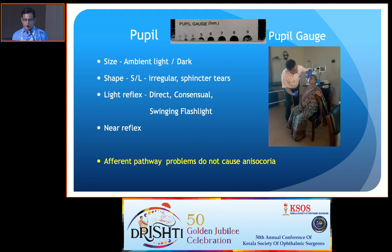A common exam question that examiners ask is: does an afferent pathway lesion cause anisocoria? The answer is no — only an efferent pathway lesion will cause anisocoria.